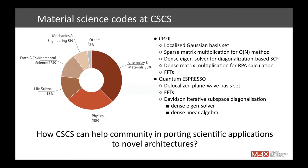CP2K uses a localized Gaussian basis set — specifically Gaussian plus plane waves. It uses sparse matrix multiplication for order-N methods. For diagonalization it uses dense eigensolvers like ScaLAPACK or ELPA. For post-DFT calculations like RPA it needs matrix-matrix multiplication of large distributed matrices plus some FFTs. Quantum ESPRESSO uses a delocalized plane wave basis set with pseudopotentials, relies heavily on FFTs, and uses Davidson subspace diagonalization with dense eigensolvers.